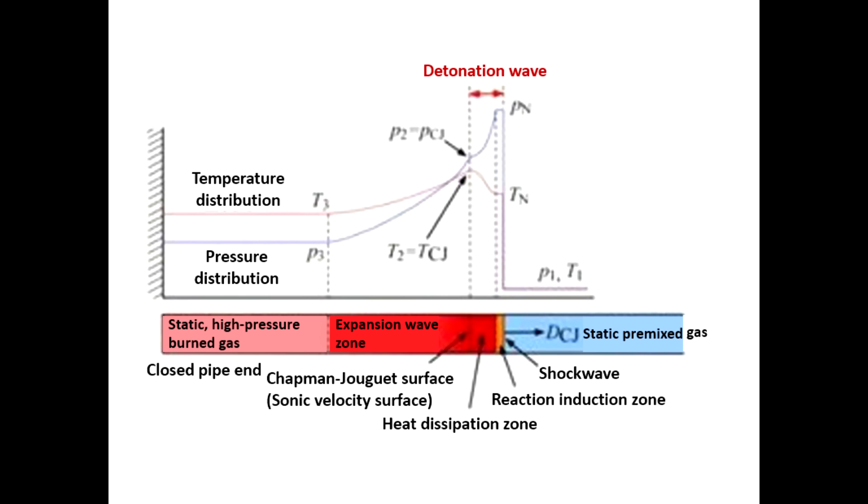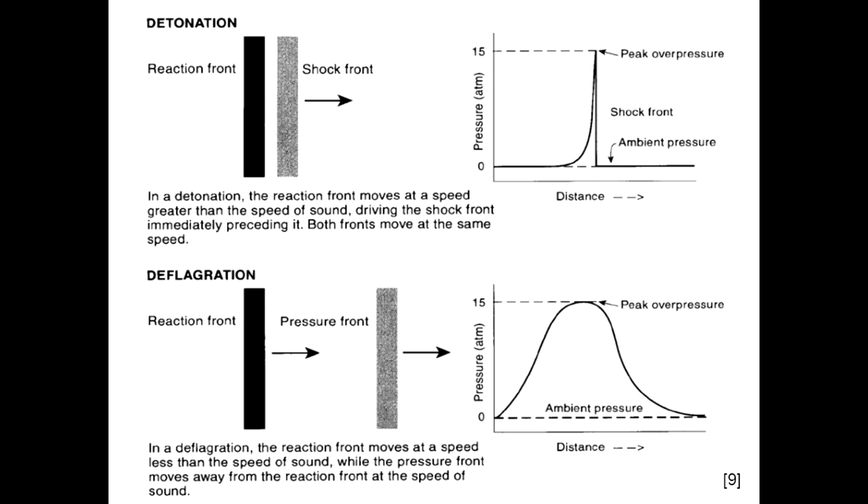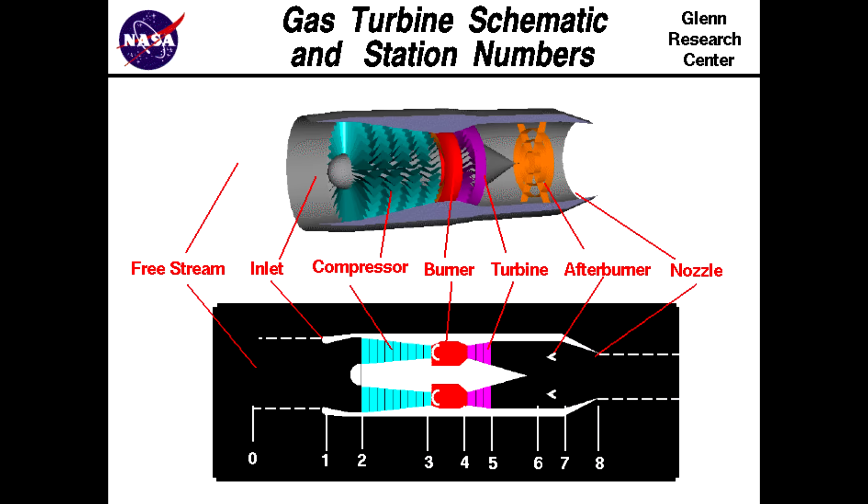So combustion processes with subsonic flame fronts get referred to as deflagration processes and supersonic shock wave shock based combustion is detonation. Regular jet engines use deflagration and detonation engines use a detonation.